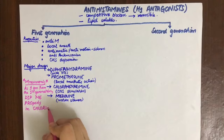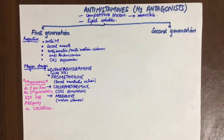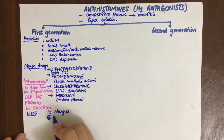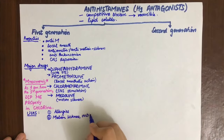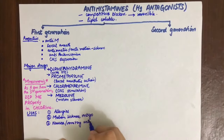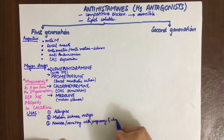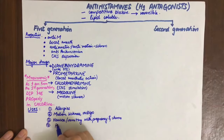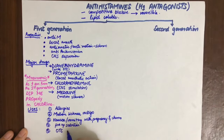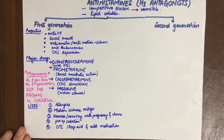Important uses of first-generation antihistamines include: all types of allergies such as rhinitis, dermatitis, conjunctivitis, and urticaria; motion sickness and vertigo due to muscarinic and histaminic blocking effects; nausea and vomiting in pregnancy and chemotherapy; pre-medication due to histamine blocking effect; over-the-counter sleep aid and cold medication; and acute management of extrapyramidal symptoms.